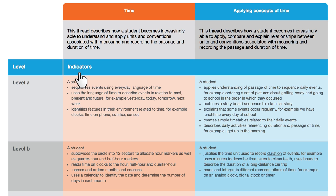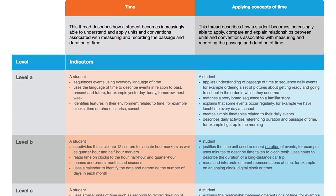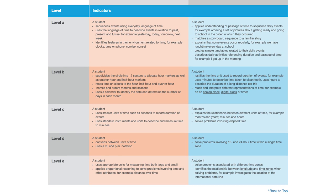Each description is called an indicator. The indicators are grouped together to form a level. Each thread has as many levels as can be supported by evidence — some threads have five levels, others have many more. Each level has one or more indicator and is more sophisticated than the preceding level. The indicators within a level are not hierarchical or ordered. Some threads may be typically achieved by most students in the first few years of schooling; others may begin and continue developing through to Year 10. At this stage in the development of the progressions, there's no levelling across threads — Level A in one thread does not necessarily equate to Level A in another thread.